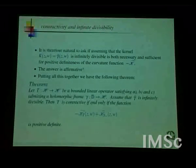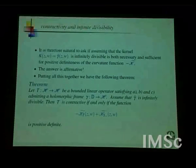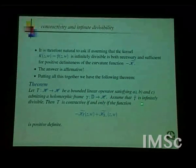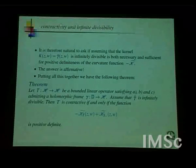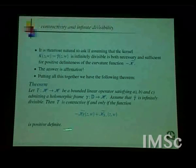Here is some kind of a theorem: if T: H → H is bounded linear and satisfies conditions A, B, C — meaning it is in the Cowan-Douglas class — and if γ̃, the reproducing kernel, is assumed infinitely divisible, then T is a contraction if and only if the quantity K₀ − K_T, interpreted as a matrix inequality between the polarized curvatures of the backward shift and T, is positive definite. The curvatures are only functions, but we interpret this as an inequality on matrices.